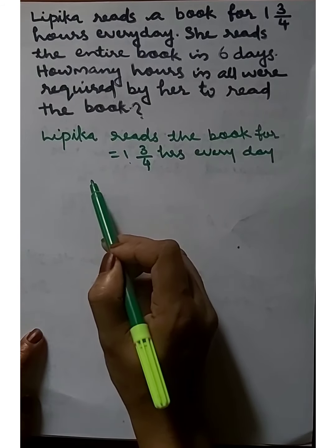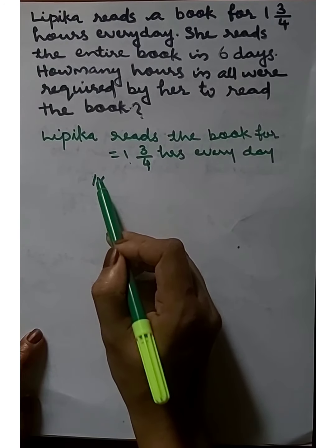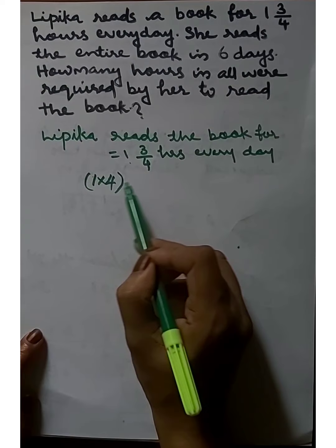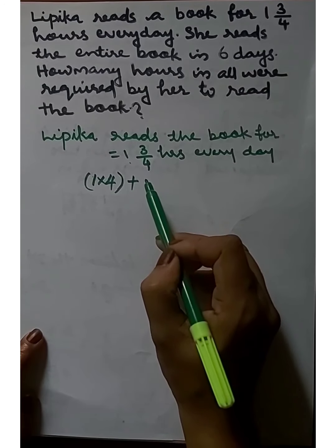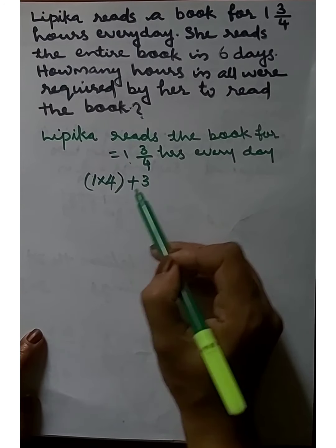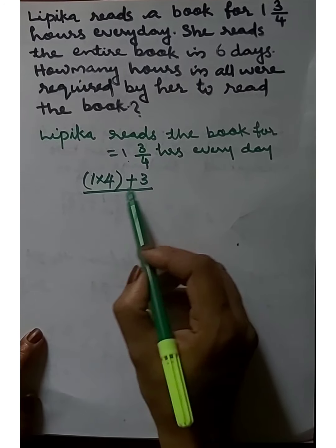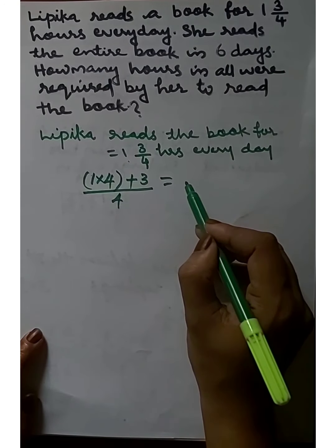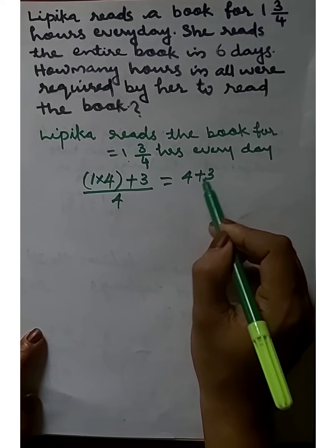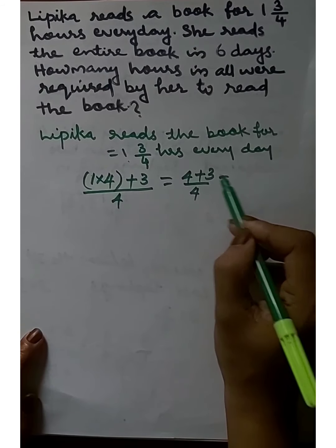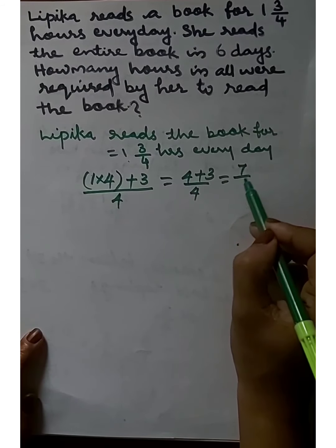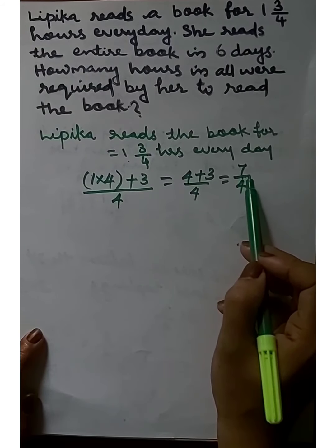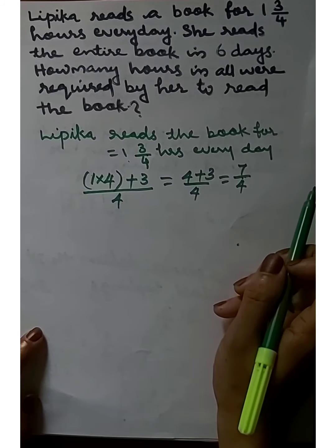The whole number is 1. We compute: 1 into denominator — denominator is 4 — plus numerator — numerator is 3 — divided by denominator. So 1 × 4 = 4, plus 3 = 7, giving us 7 by 4. We convert this mixed fraction to 7/4.